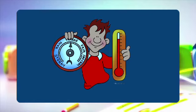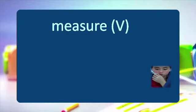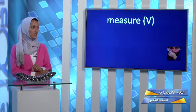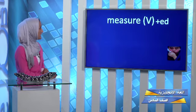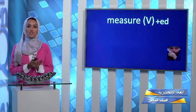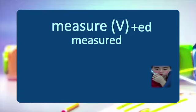What do we use the thermometer for? It's a measuring instrument. So we have the verb 'measure.' When I use my ruler to measure a line, or when I use the thermometer to measure the temperature — that is 'measure.' To change 'measure' from present to past tense, we add -ed and remove one 'e,' so it becomes 'measured.'